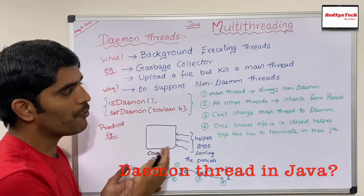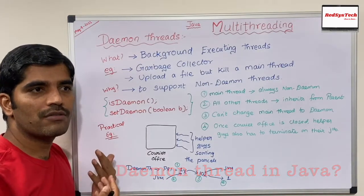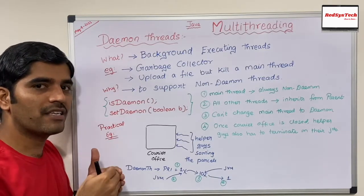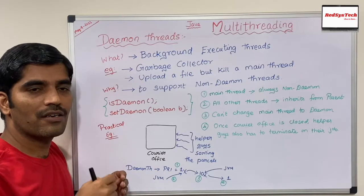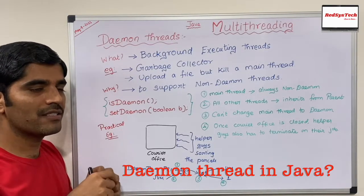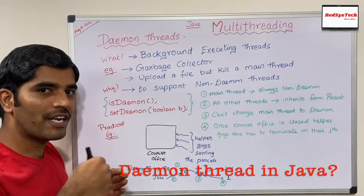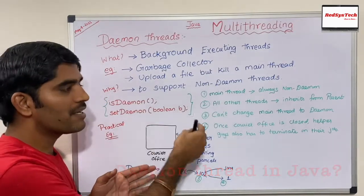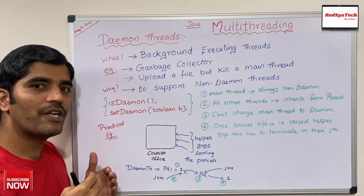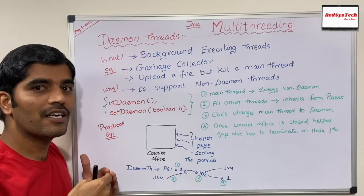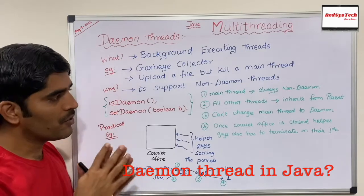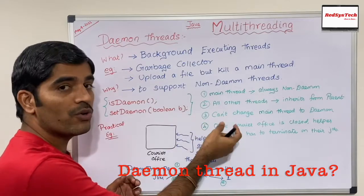If you try to call `setDaemon(true)` on the main thread, it will throw an error — I'm going to show you that. For all other threads — custom-defined threads you create in your program — they inherit their daemon property from their parent thread. Since your custom threads are created and started by the main thread, they also inherit non-daemon status by default. If you want to make a custom thread a daemon thread, that is possible using `setDaemon(true)`, but you must do it before calling `start()`. Once the thread is started and moves to the runnable state, you cannot change it.